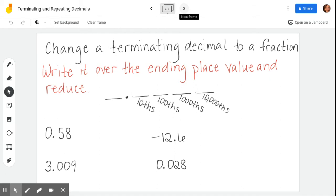To change a terminating decimal to a fraction, we're going to put the digits over the ending place value and reduce. Now I've got listed here your place values. So you've got your whole numbers, right? And then your decimal. After that, it's tenths, hundredths, thousandths, ten thousandths, and so on.